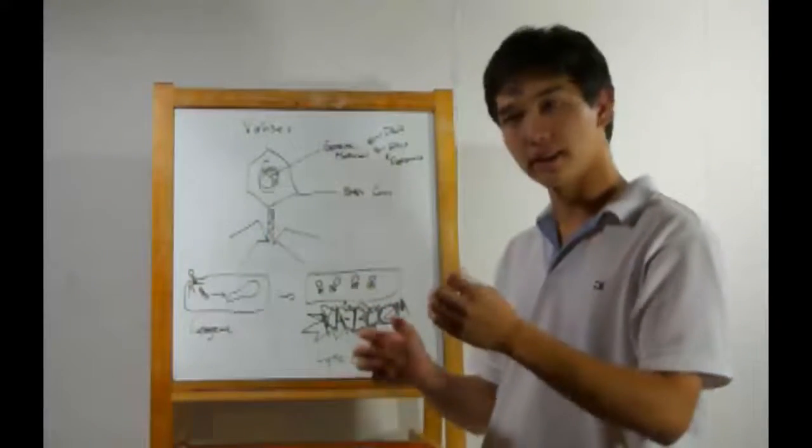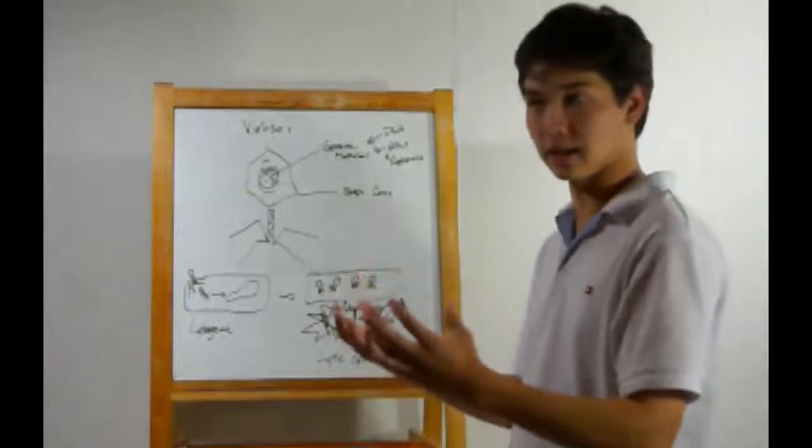If it's a retrovirus, the RNA will first make a DNA version of itself, which will then take over the cell.